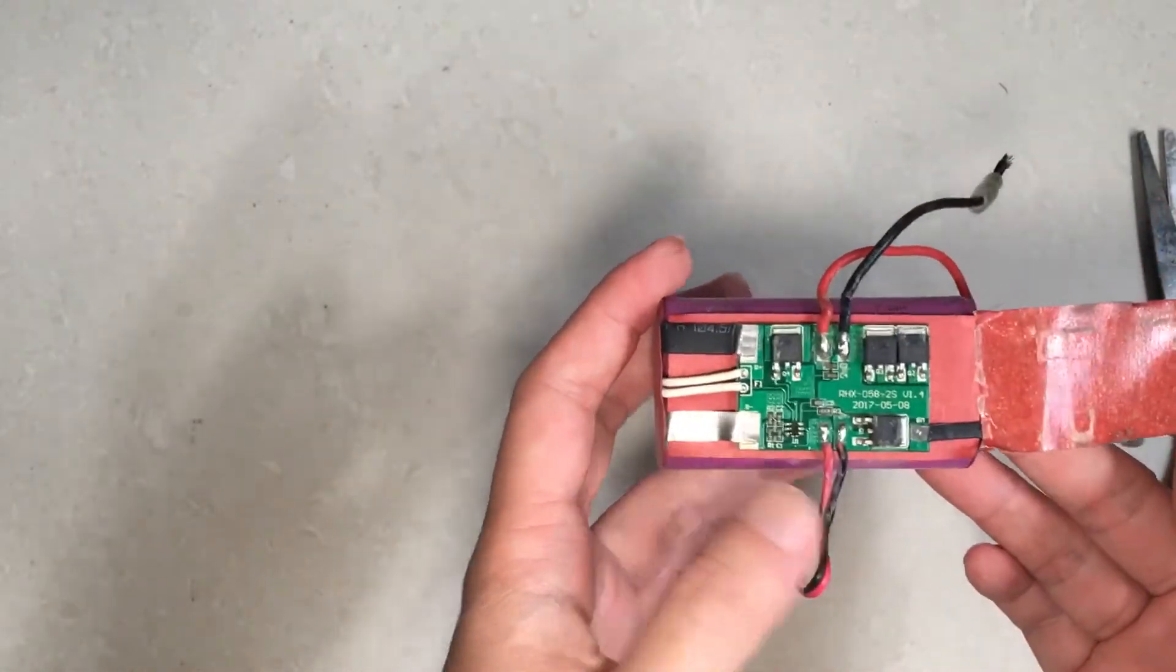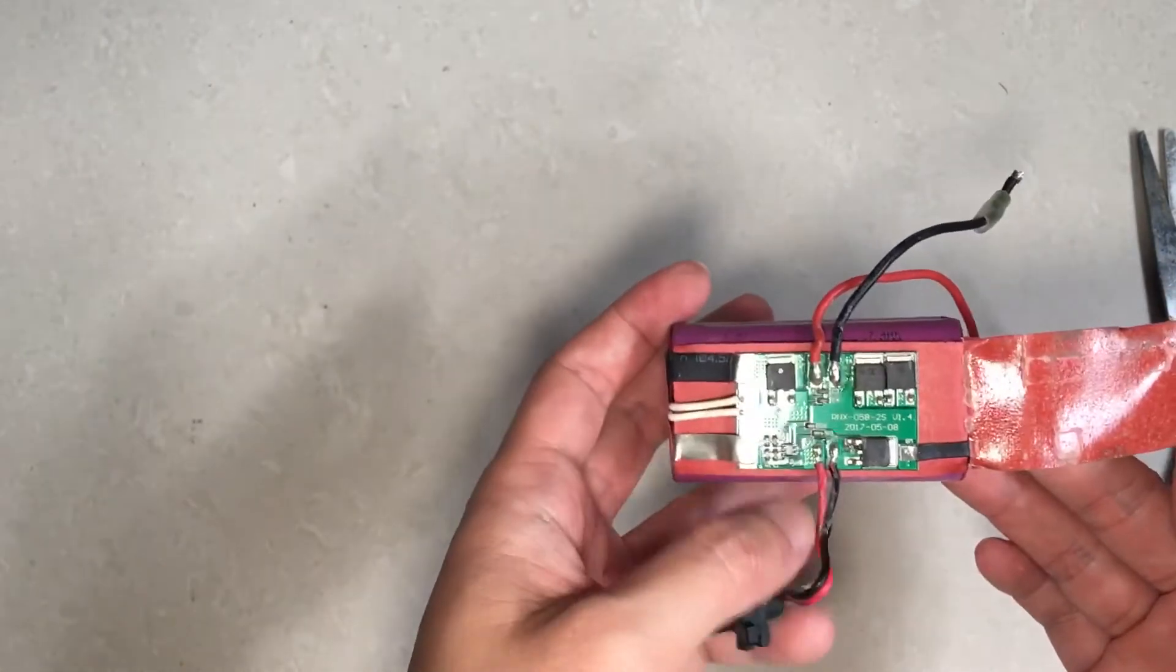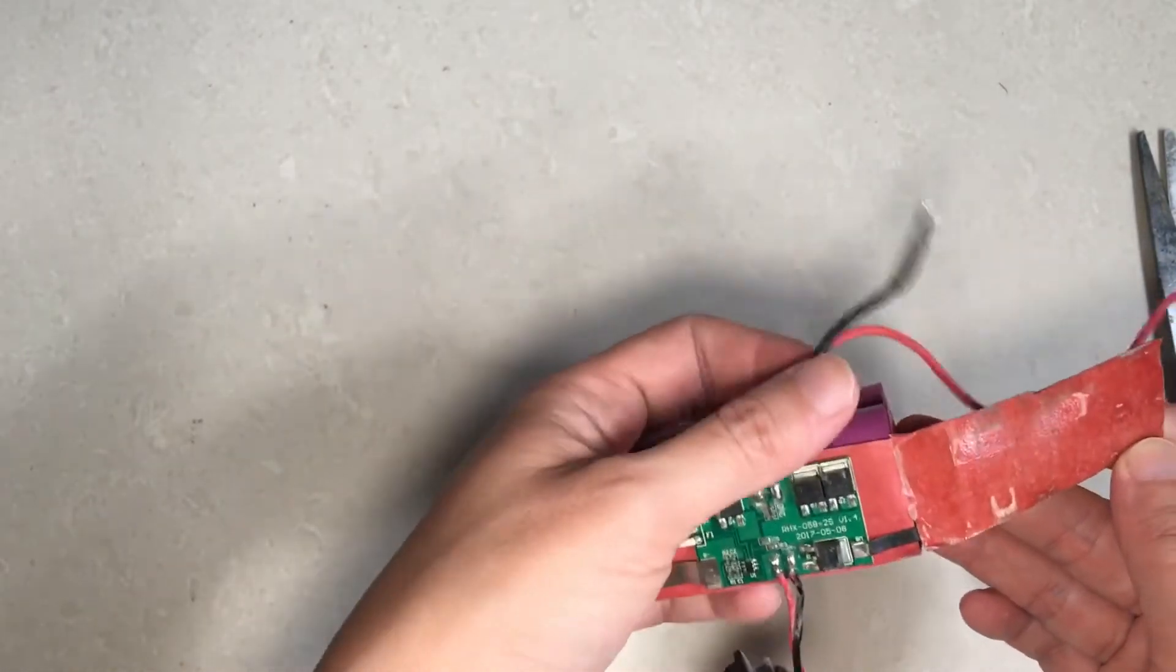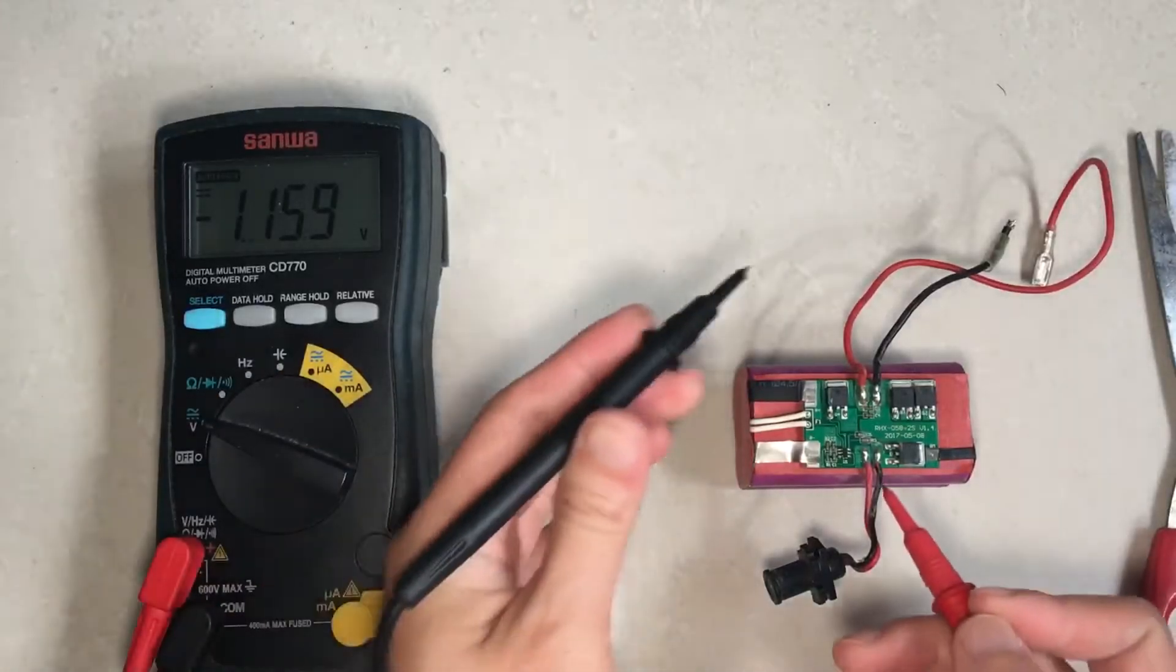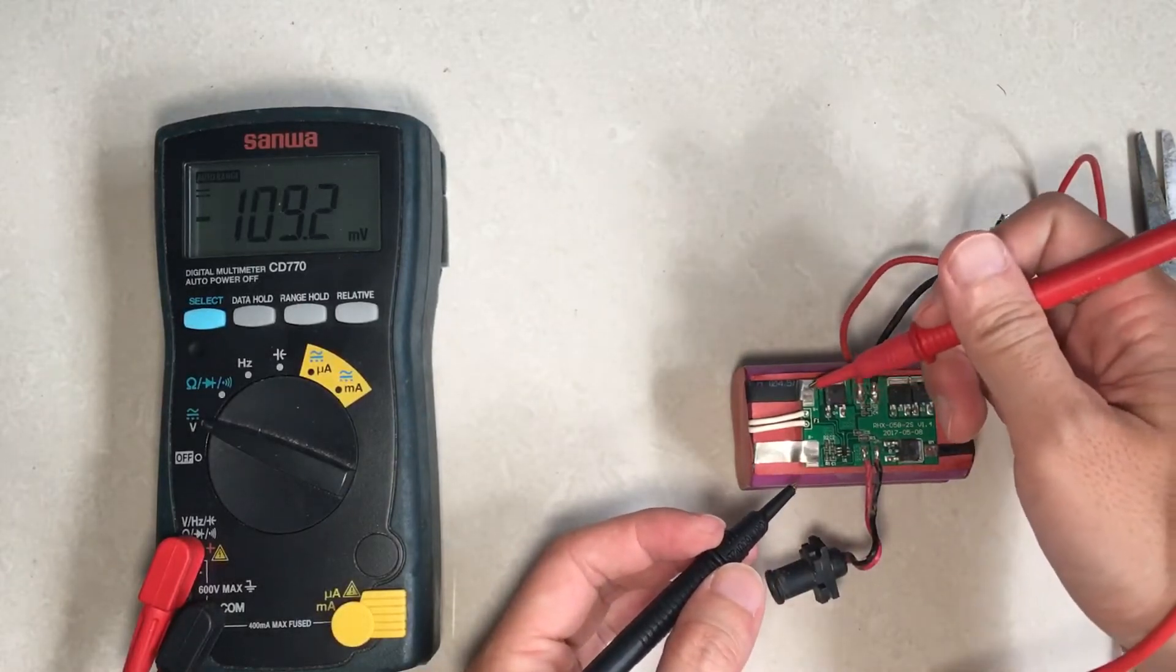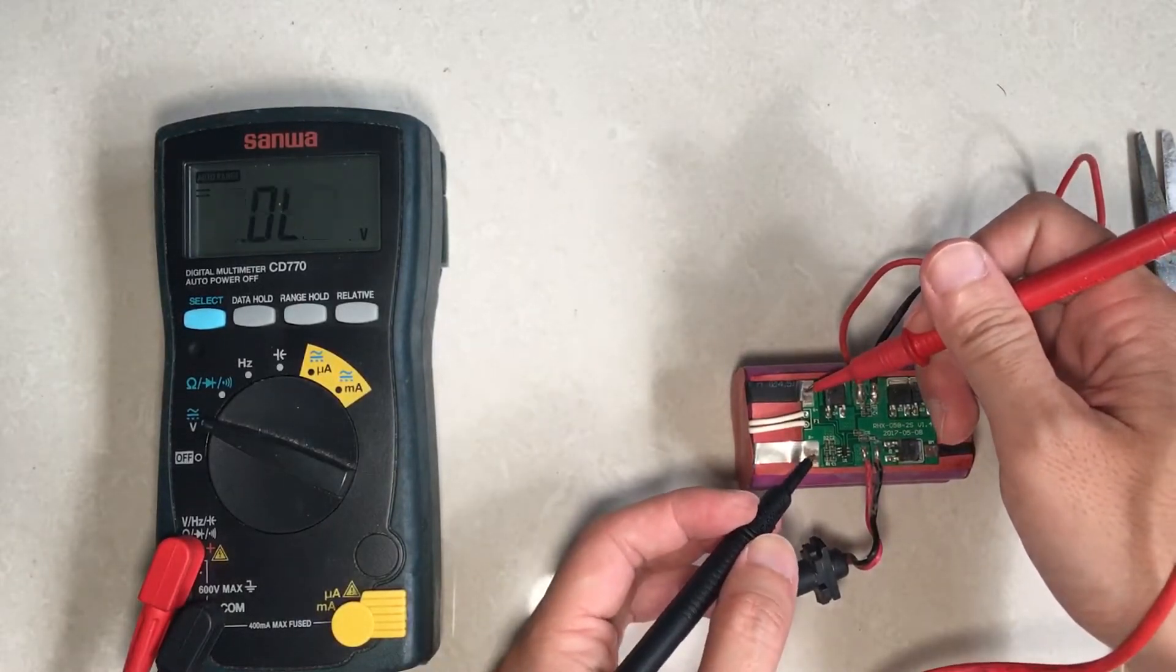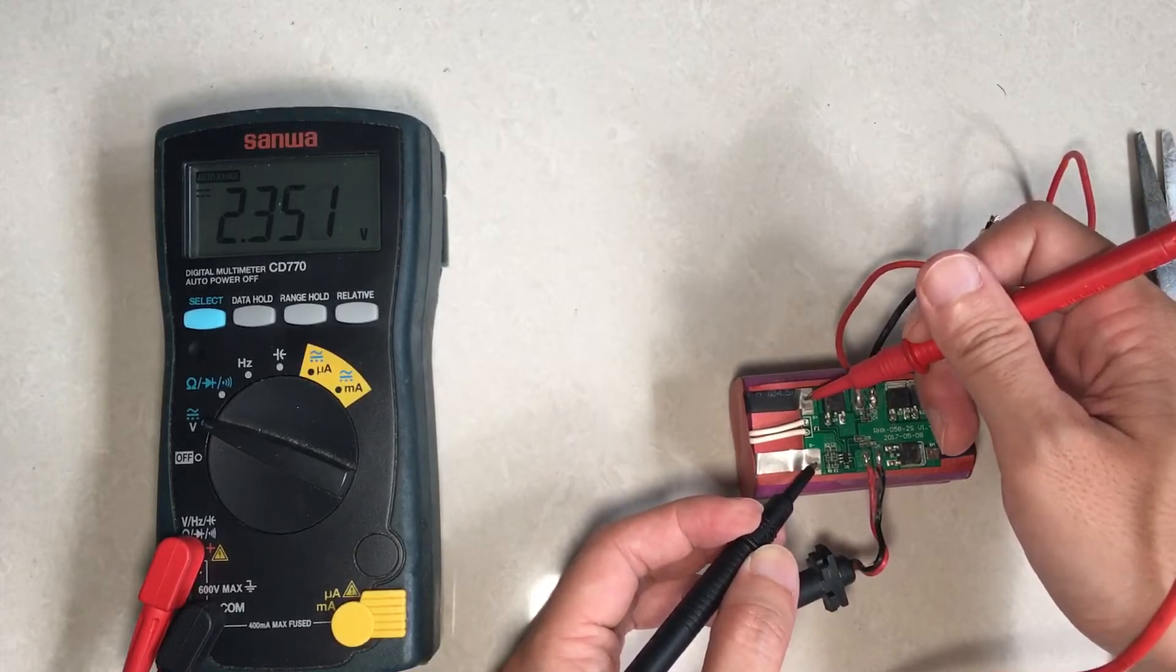And here we have the control board connecting to both the charger and as well as the output to the vacuum cleaner. Let's test the voltage of the batteries directly connected to this B plus and B minus to see if there's anything. Looks like there is some voltage at 2.35.